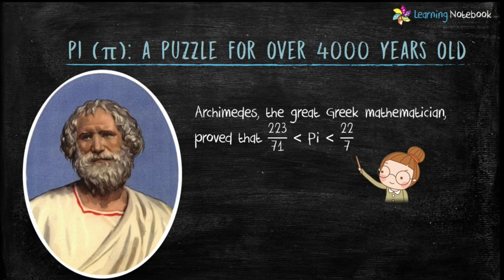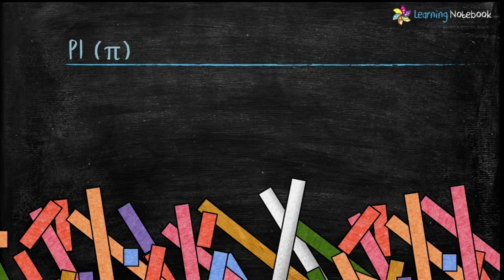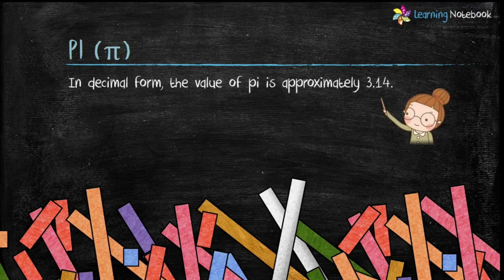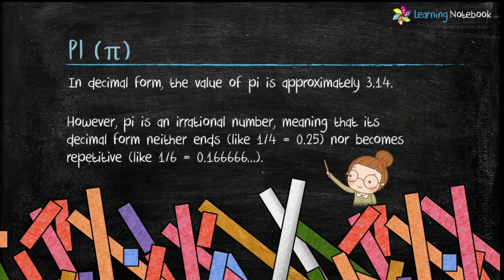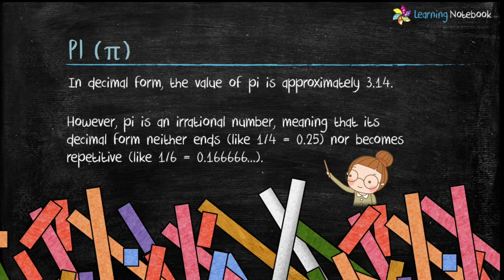Students, we know in decimal form the value of pi is approximately 3.14. However, pi is an irrational number. It means its decimal form neither ends nor becomes repetitive.